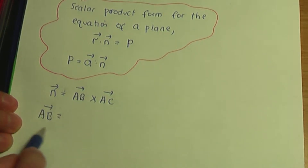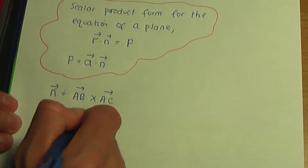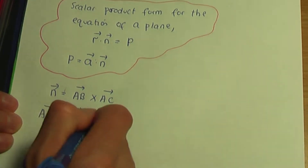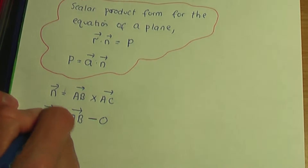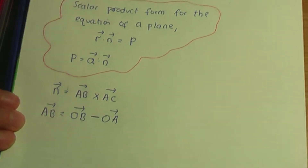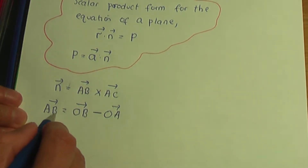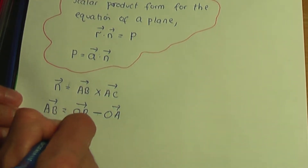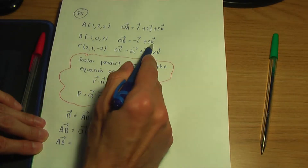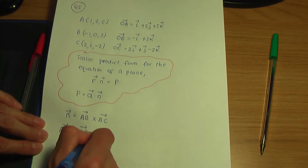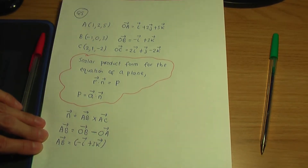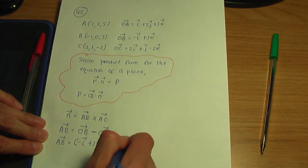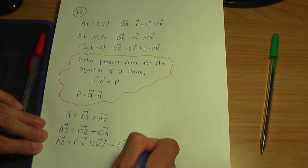Here's the trick to work out vector AB: it's going to be O of the second letter minus O of the first letter. So vector AB = OB − OA. The second letter is B, so it's OB, always minus OA. Vector OB is −i + 3k, minus vector OA which is i + 2j + 5k.